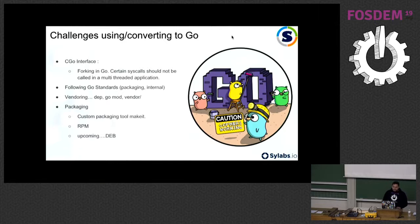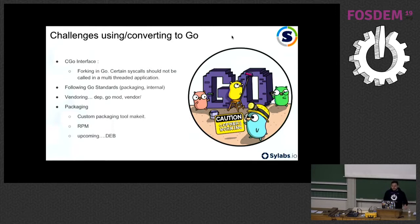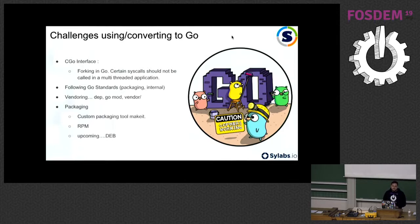Building a CGo project as complex as Singularity led us to rethink how AutoTools work, because AutoTools is too complicated for something this complex, but Go is kind of easy to build. So one of our engineers designed a homemade tool for building RPM and Debian packages — the Debian package is still under work. But you can right now jump into the Singularity project and start building and distributing your RPM package.